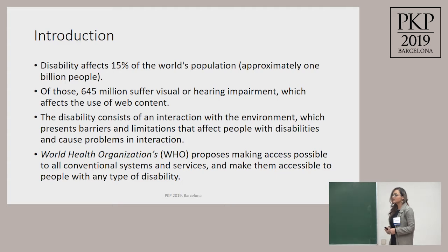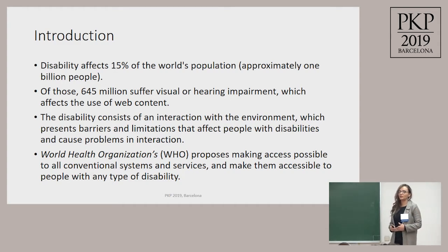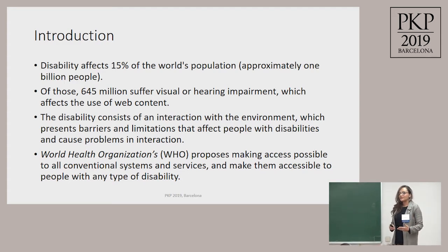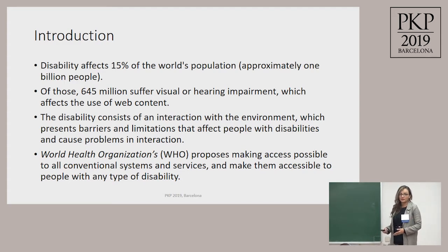Disability consists of interaction with the environment. We have a wrong meaning of what disability is, because we say the person has a disability. No — it's the environment that has that problem. The environment has some barriers or problems that prevent people from interacting with it. For that reason, we have to make sure that our environment — whether a building or a website — is well done for all kinds of people.